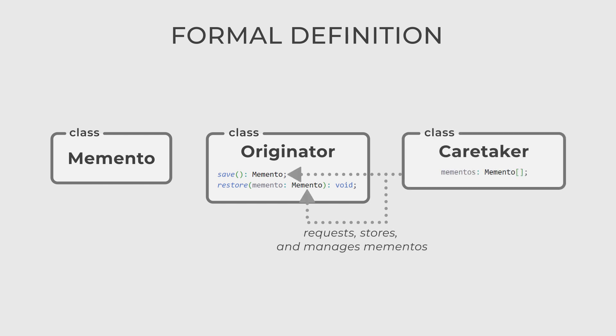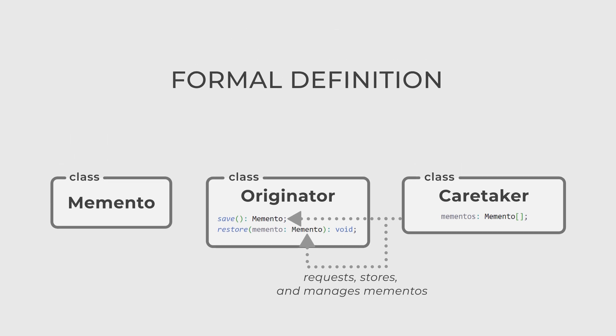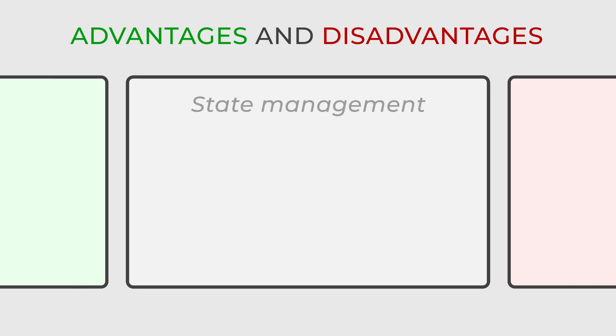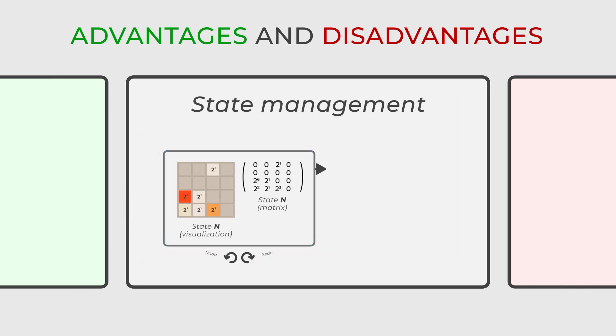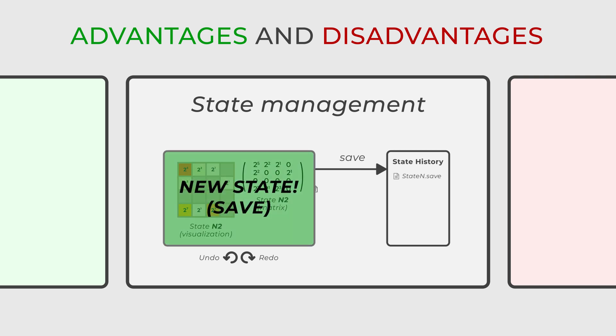It requests mementos from the originator and can use them to restore the originator's state. The memento design pattern enables preserving and restoring an object's state, thereby facilitating undo and history functions. This proves especially beneficial for objects requiring undo-redo capabilities or a state history record.